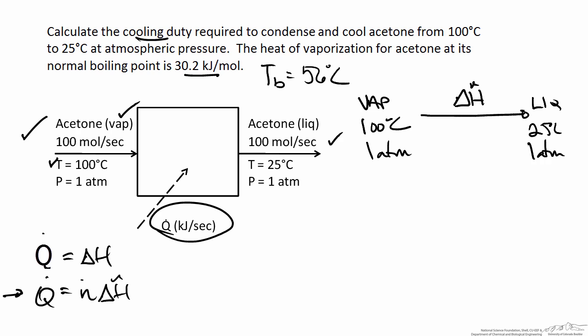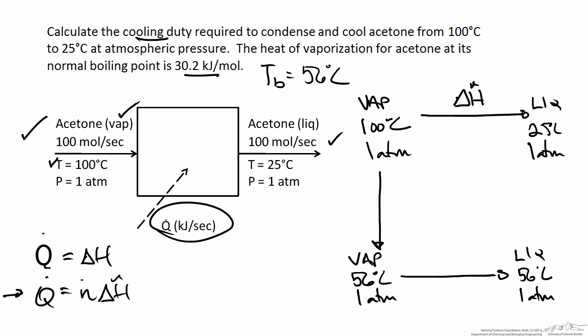We need to get to the temperature at which the phase change occurs, and we can do that in one step by changing temperature while keeping the phase constant. So our first intermediate step has vapor at the boiling point of 56°C at atmospheric pressure. At the boiling point we change phase to liquid in a second step at the same temperature. Our third step changes the temperature of the liquid from 56°C to 25°C while keeping the phase constant. Each of these three steps has its own change in specific enthalpy — delta H1, H2, and H3 — and by the definition of the state function, the overall enthalpy is the sum of these three steps.